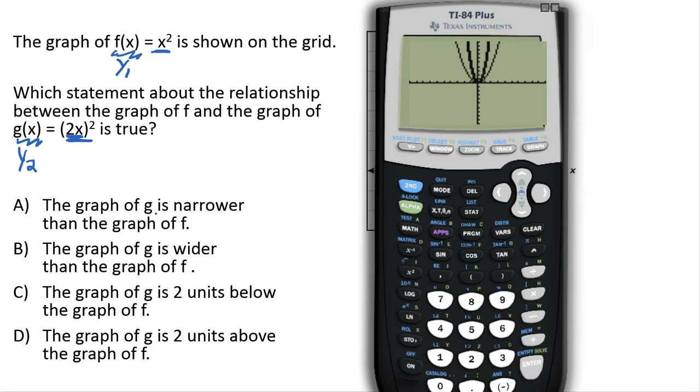And you'll notice (2x) squared looks like it's a little bit narrower than x squared. So, that's a good question. Which one's f and which one's g? I have to stop and think about it for a second. Okay, the first one we graphed was f. I'm going to call that the first graph. It's the wider graph.